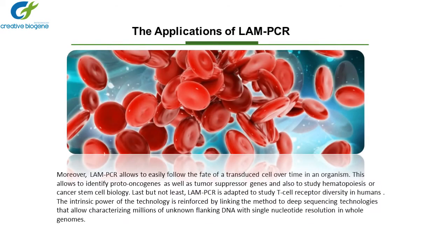Moreover, LAM-PCR allows easily following the fate of a transduced cell over time in an organism. This allows identifying proto-oncogenes as well as tumor-suppressor genes, and also to study hematopoiesis or cancer stem cell biology. Last but not least, LAM-PCR is adapted to study T-cell receptor diversity in humans. The intrinsic power of the technology is reinforced by linking the method to deep sequencing technologies that allow characterizing millions of unknown flanking DNA sequences with single nucleotide resolution in whole genomes.